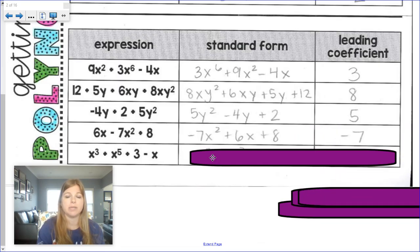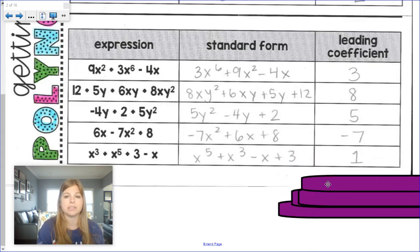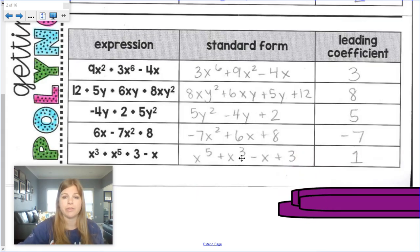And our last one. Highest degree? x to the 5th plus x to the 3rd minus x plus 3. That has a degree of 5, 3, a degree of 1, and then a degree of 0. Leading coefficient? That number in front of the x to the 5th is really a 1. That's it.